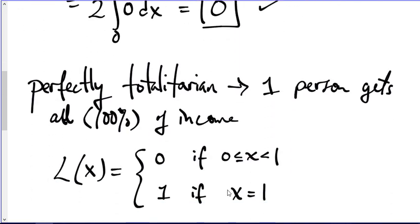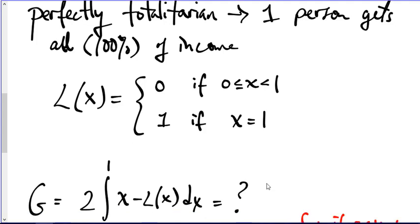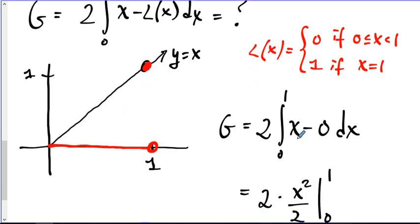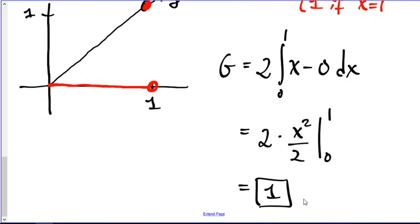But what about the perfectly totalitarian society where one person gets all the income? That's the Lorenz curve that's defined in this way. The area between those two curves is exactly this value, X minus 0, on that interval. So simplifying X minus 0, I get just X, and finding an antiderivative, that's X squared over 2. These 2's cancel and plug in the bounds and you get 1. So this is the Gini index for this perfectly totalitarian society, an index of 1 or 100.